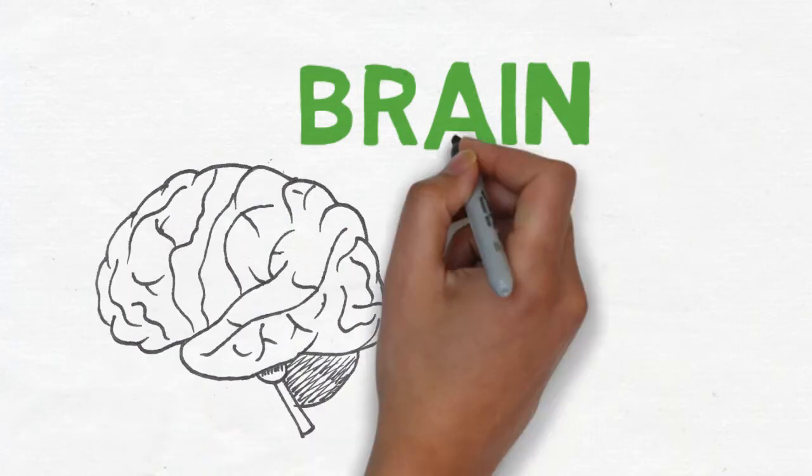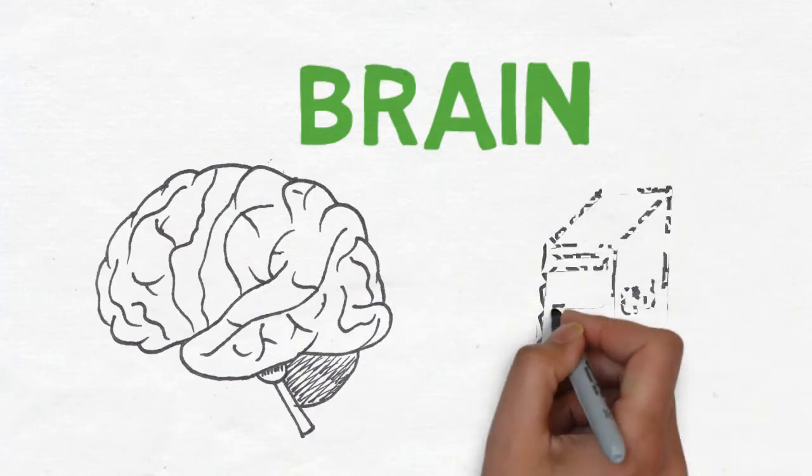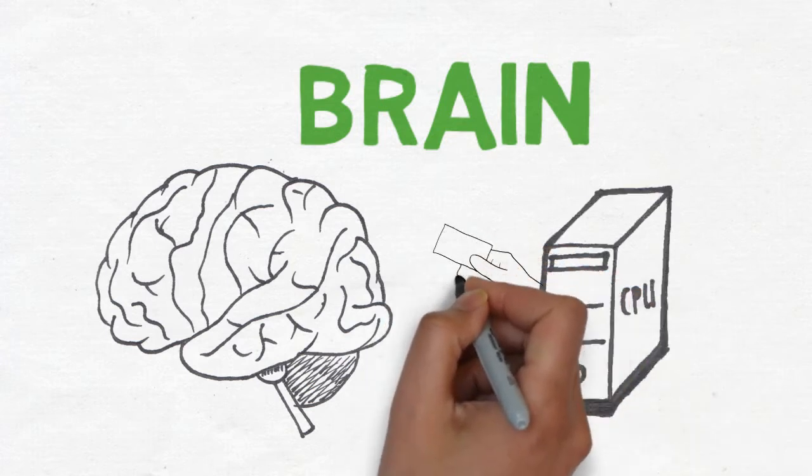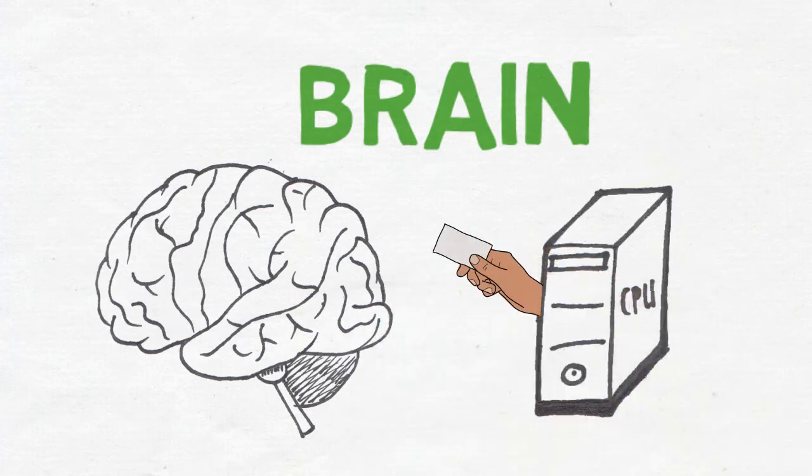Similar to a computer's CPU, the brain takes information from all of the senses, stores it, processes it, makes decisions based on it, and sends commands out to the body.